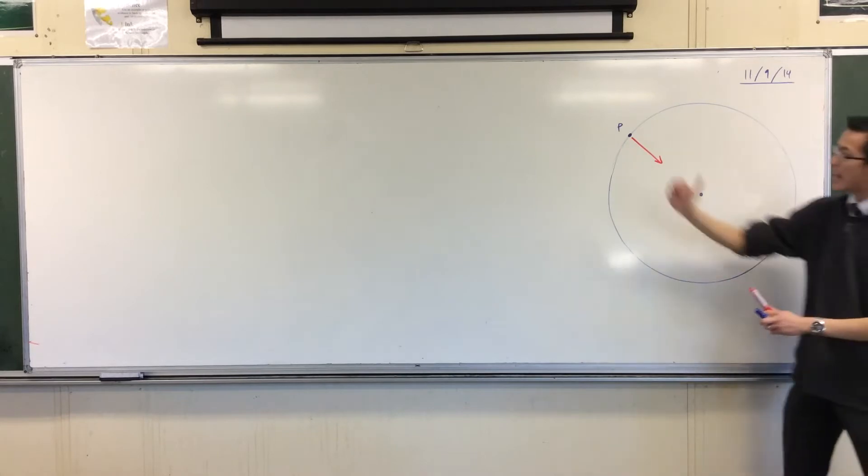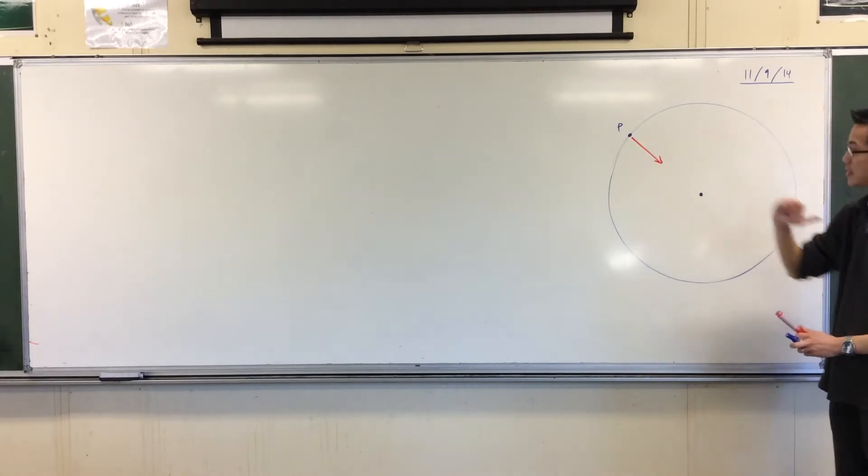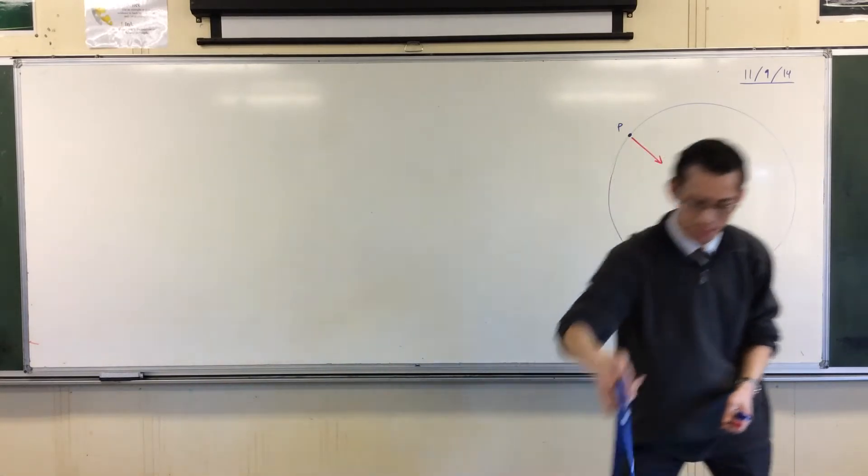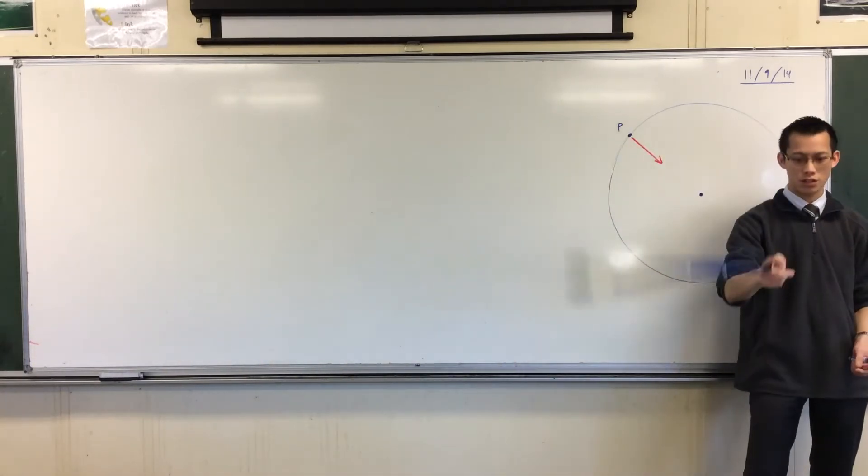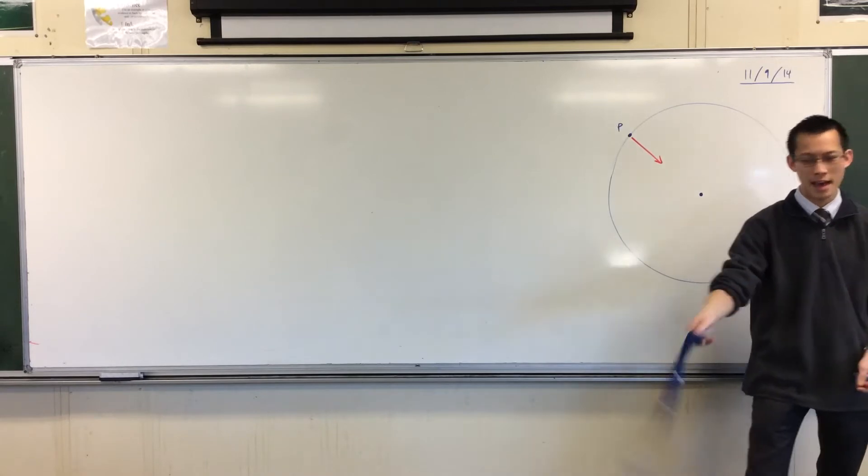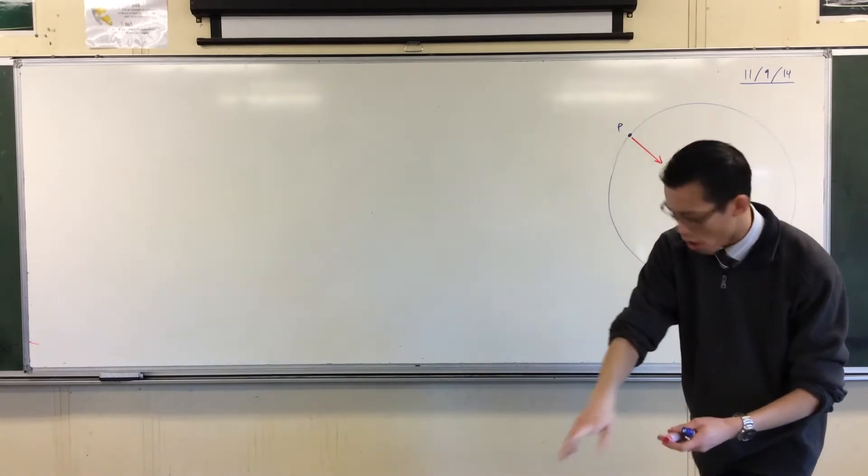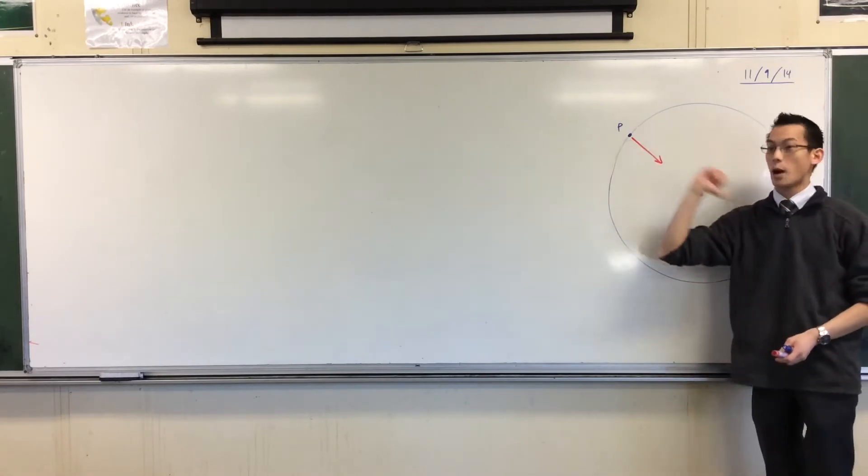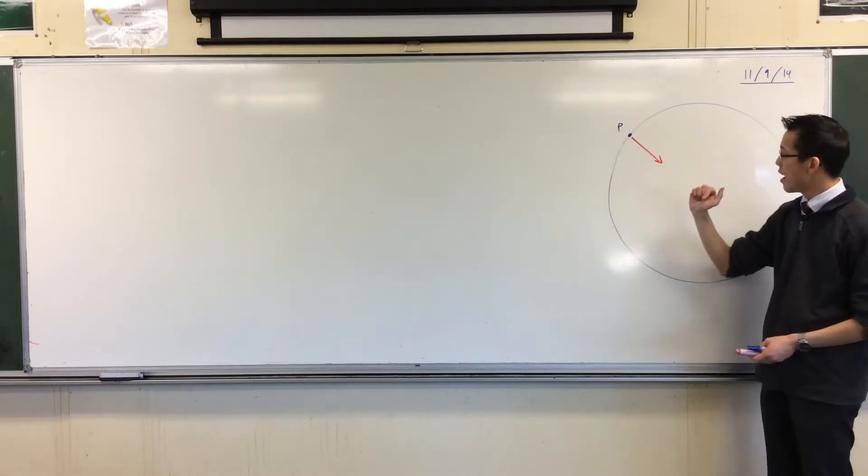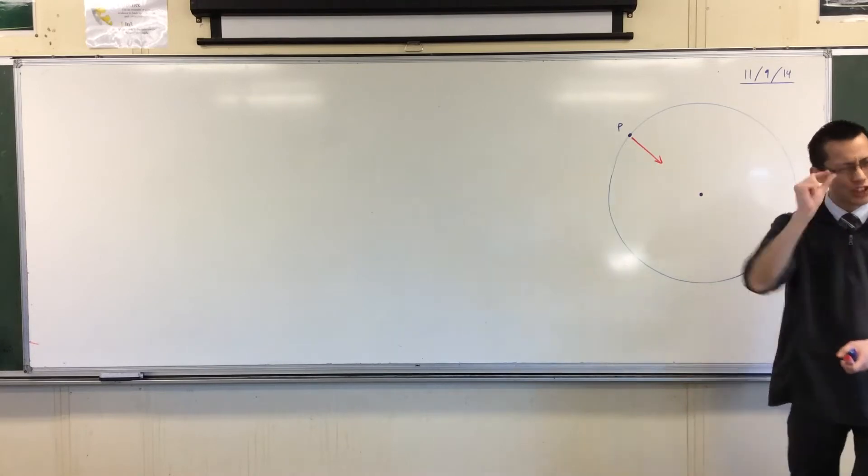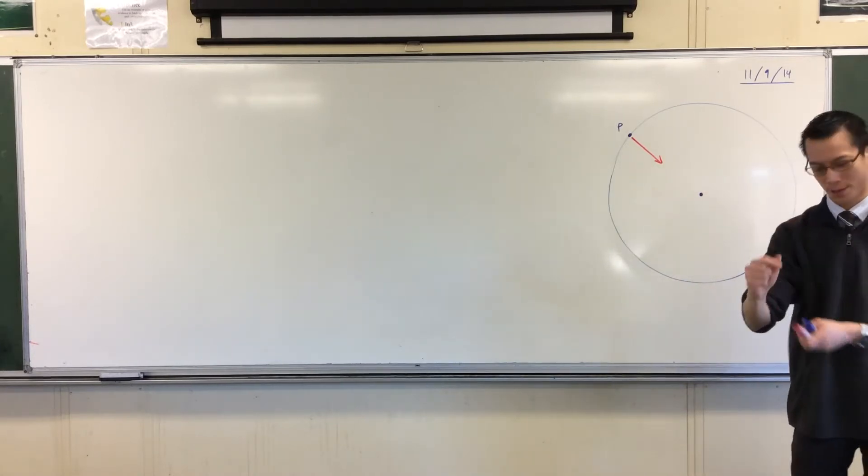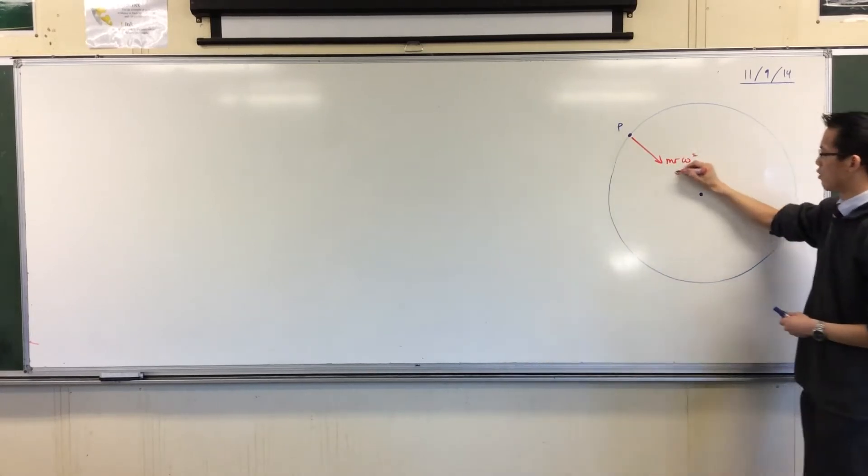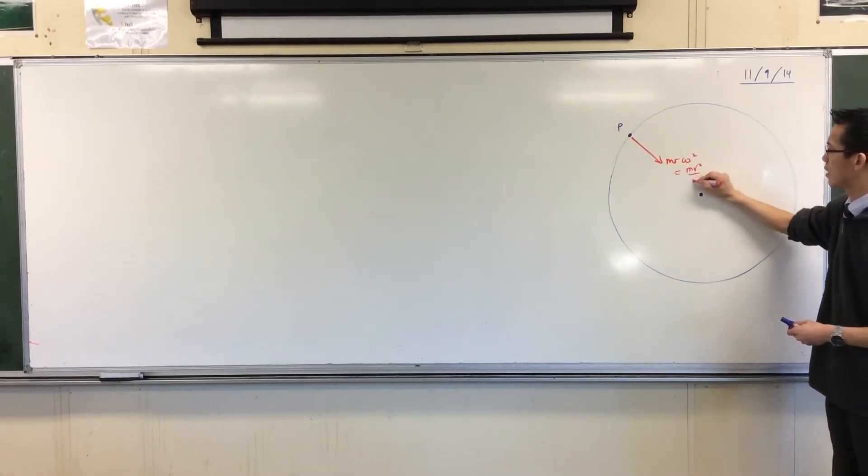We looked at this and said that force acting toward the center can come from a variety of things. It might come from tension in a string, some kind of medium like that. It might come from, if this was like a celestial body or planet, that force might come from gravity. And we noticed that it had to be just the right amount of force. It had to be mR omega squared or mV squared on R.